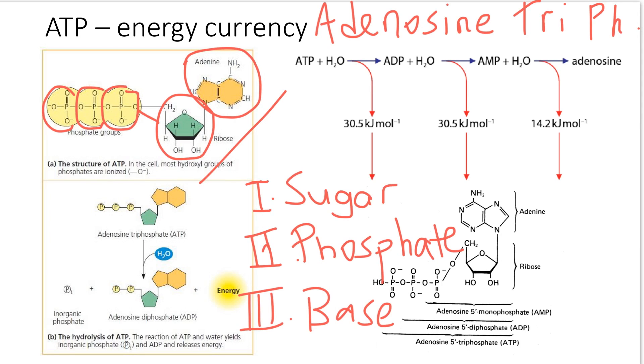During steps of respiration, when energy is released, the energy is stored in the chemical bond between the phosphates. When the ATP molecule loses one phosphate, energy is released. When one of the phosphates is broken, energy is released. When another phosphate is broken, energy is released.